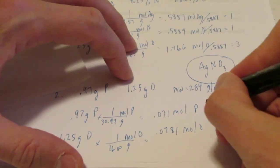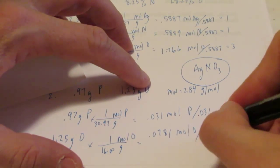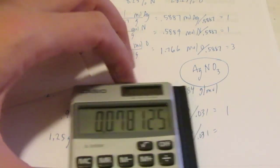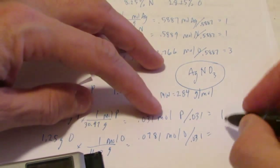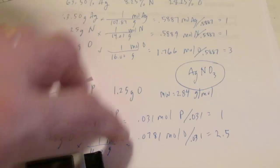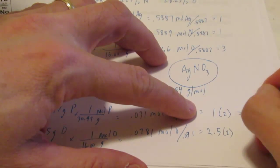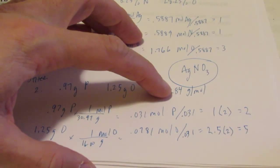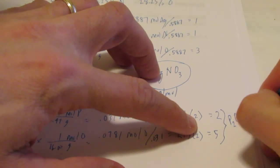These aren't very pretty. Let's see if we can prettify them. Divide each by the lowest number, 0.031. So let's see, 0.0781 divided by 0.031 is 2.5. Come on, man. 2.5. That's not a whole number. What do you think we can do here? If you said to double each one to make them whole numbers, you're correct. So 2 phosphoruses and 5 oxygens. So that means my empirical formula is P2O5.